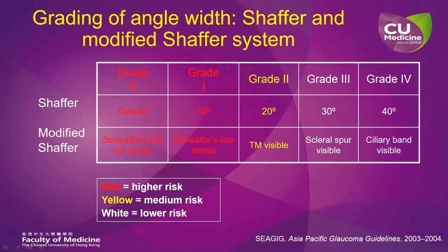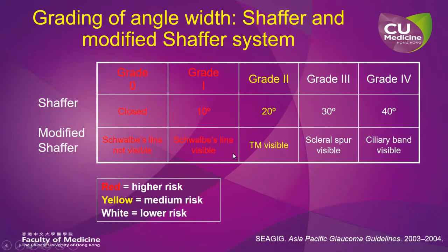The width of the angle can be graded using various systems, and I personally prefer the Shaffer or more accurately the modified Shaffer system. In the original Shaffer system, grading depends on the actual absolute angle width, whereas in the modified Shaffer system it depends on what you see through gonioscopy. If Schwalbe's line is not visible, it is grade zero and closed. If Schwalbe's line is just visible, it is grade one. If you can see trabecular meshwork, it is grade two. If you can see the scleral spur, it is grade three. And when the ciliary band is also visible, the angle is wide open and we call it grade four.